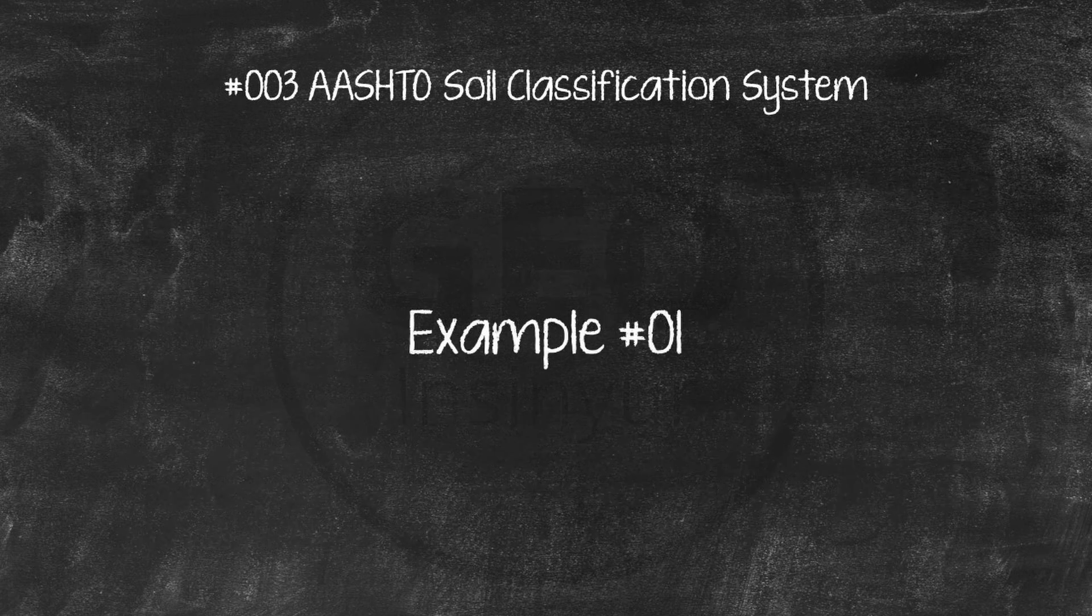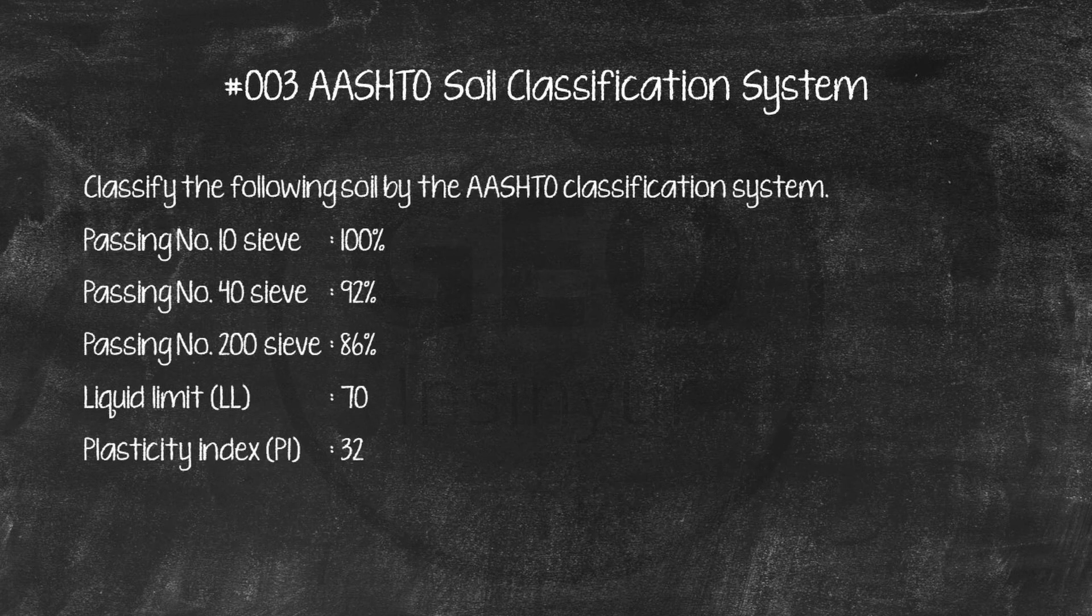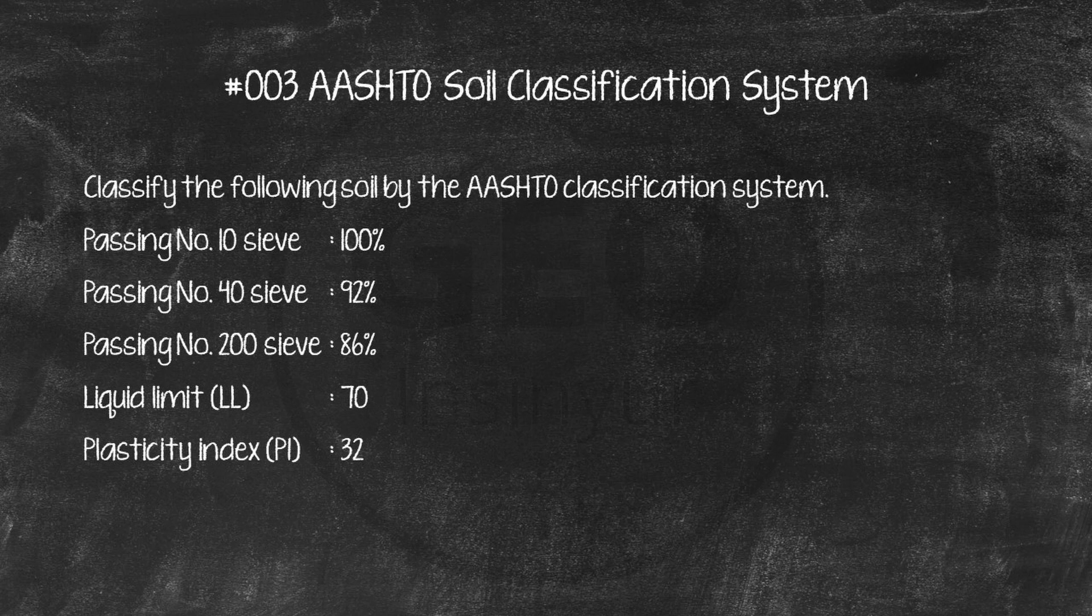Example number 1. Classify the following soil by the AASHTO classification system. Passing number 10 sieve, 100%. Passing number 40 sieve, 92%. Passing number 200 sieve, 86%. Liquid limit, LL, 70. Plasticity index, PI, 32.